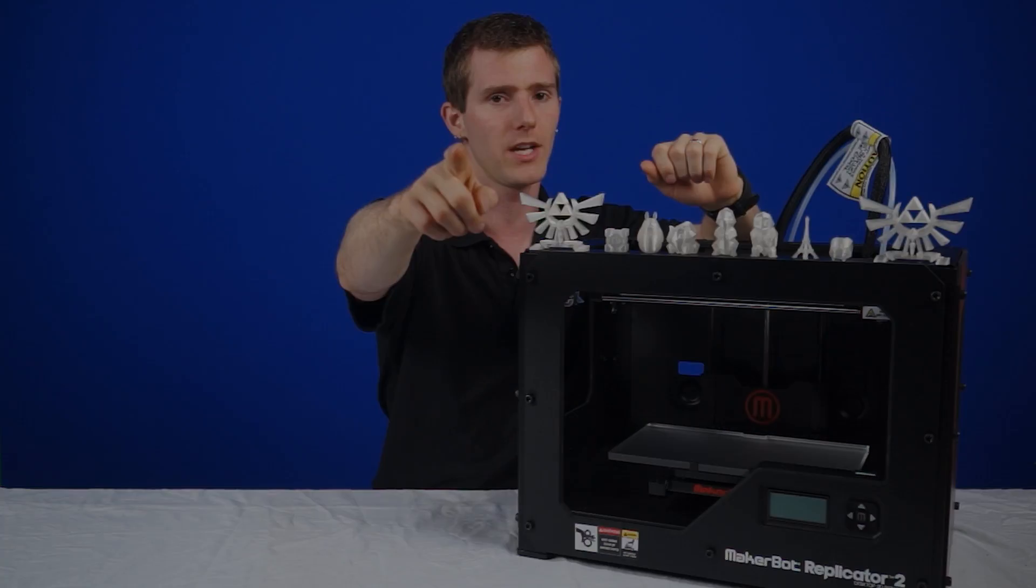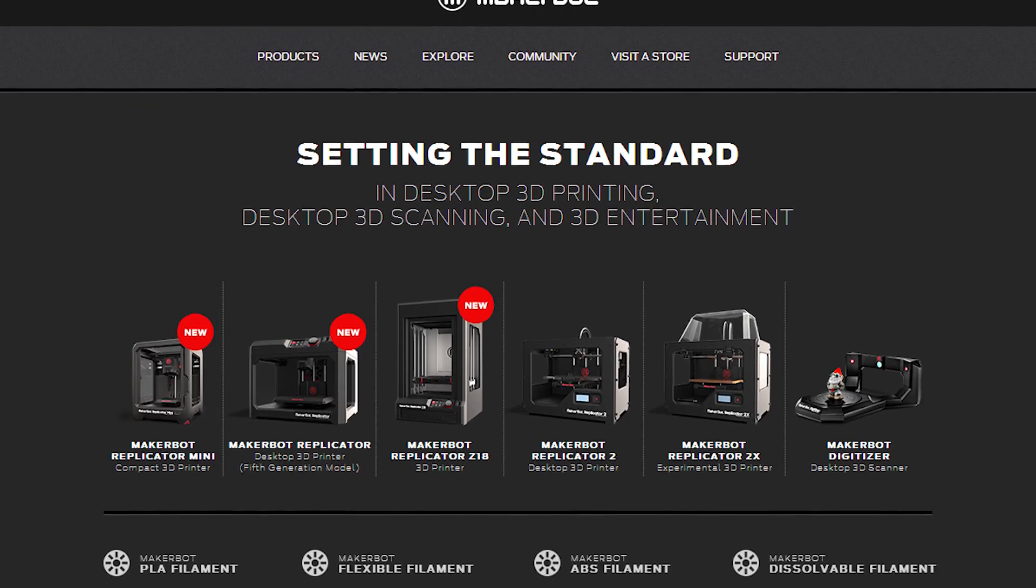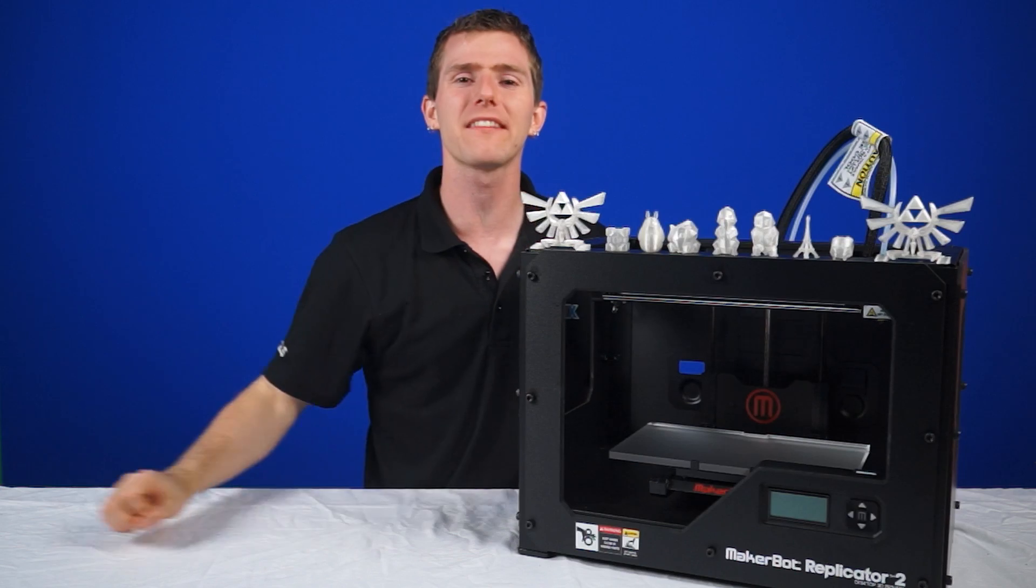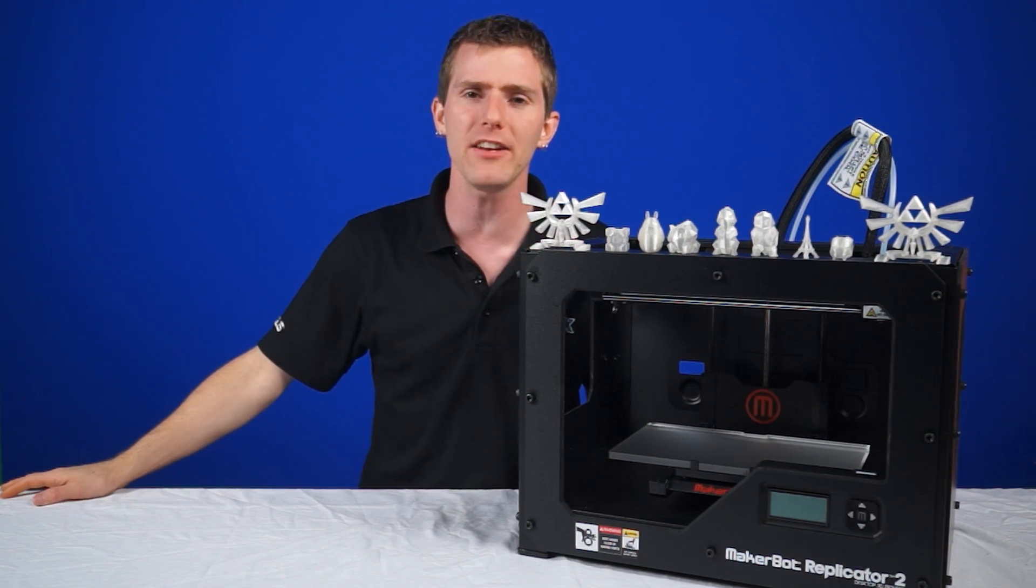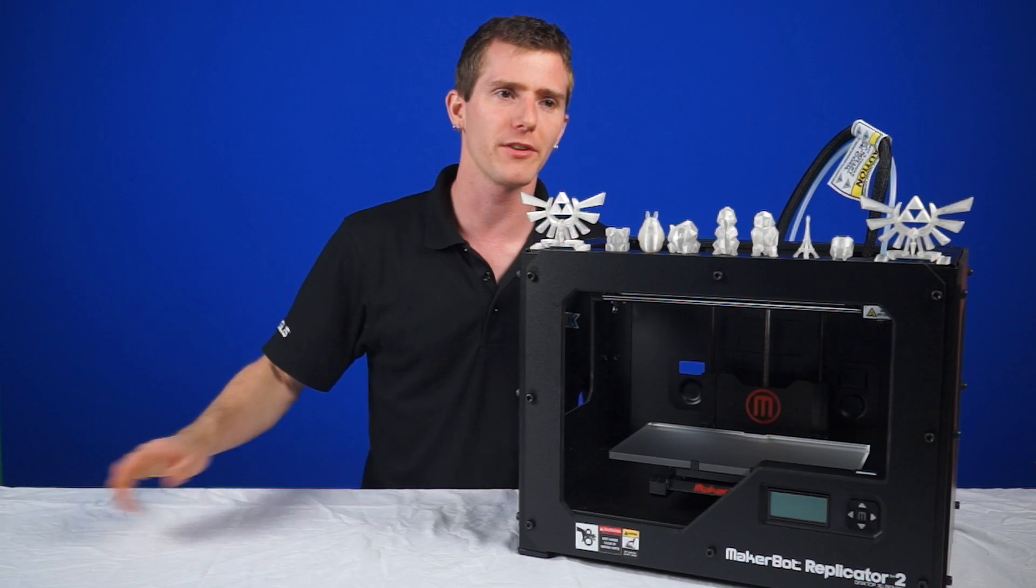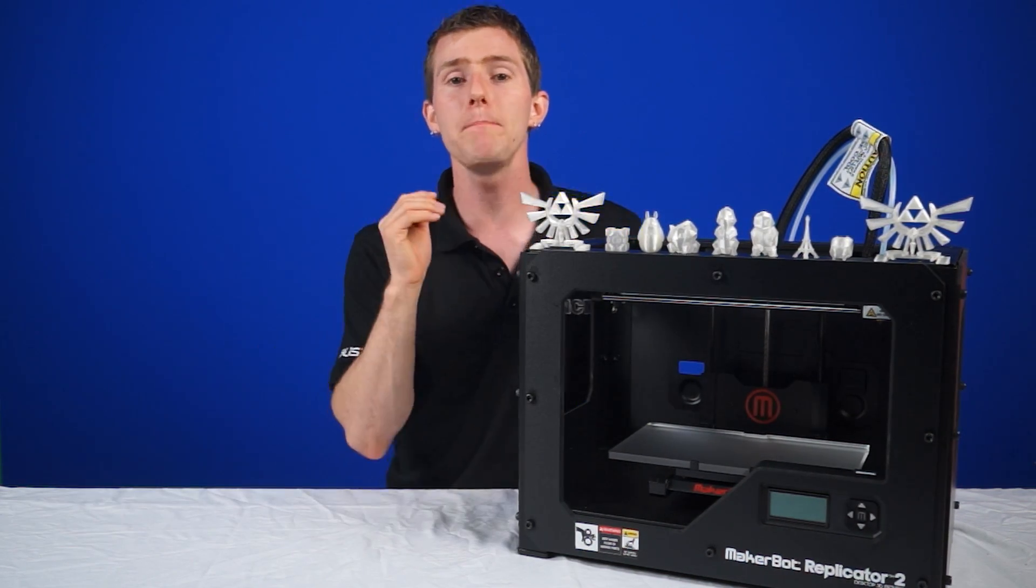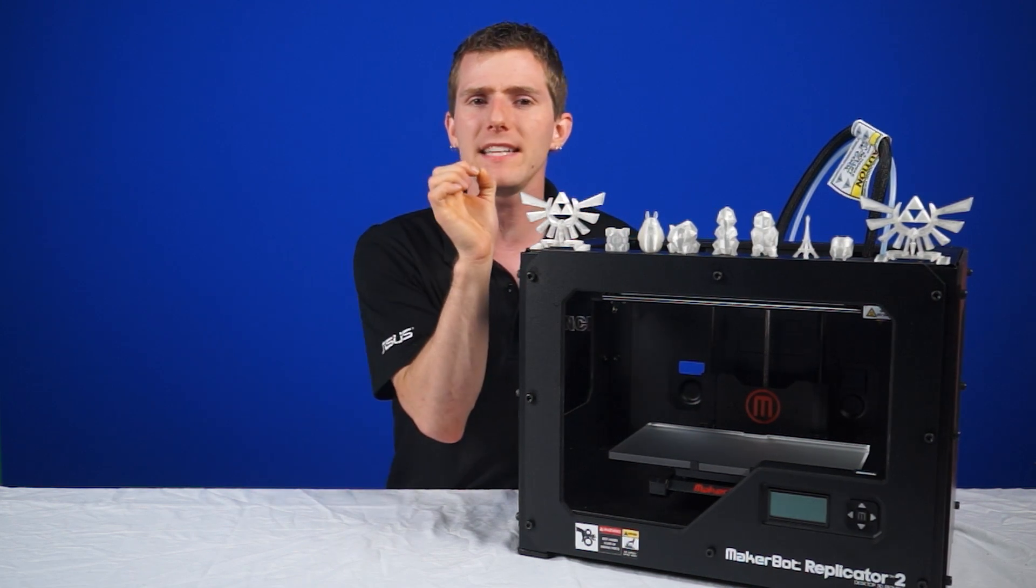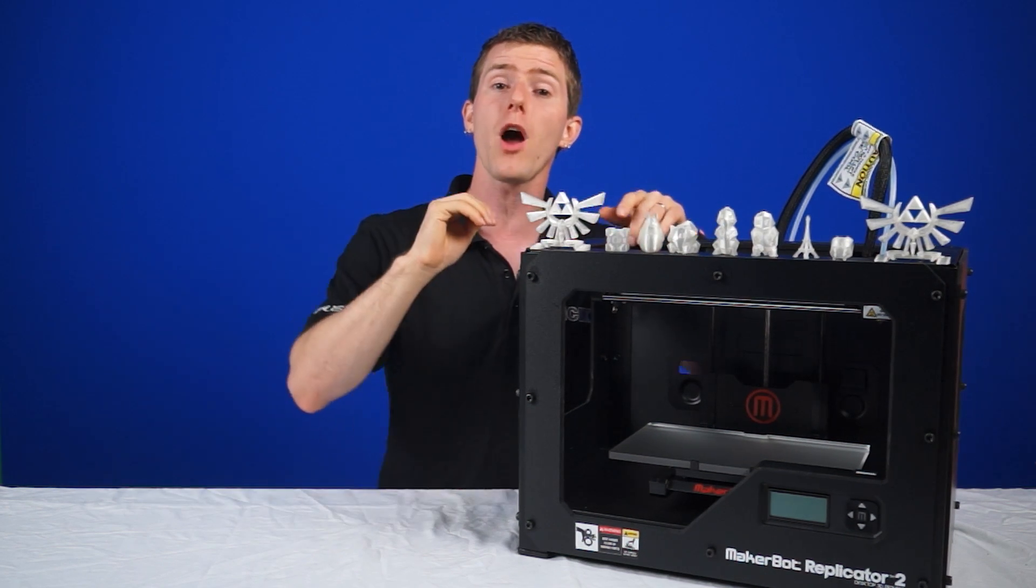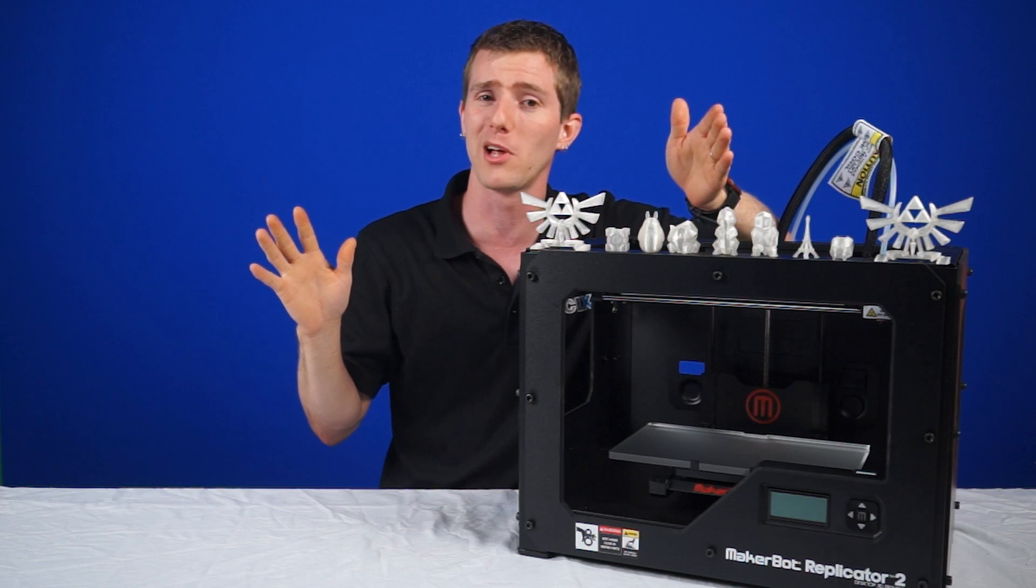Now on to the MakerBot Replicator 2. This is just one of their standard models with a minimum layer height of just 100 microns. That's 0.0039 inches for you Americans out there. Actually, I think microns are used in America too, but good try. It's his first script. That means that you have the ability to print very fine details with very small tolerances, allowing for smooth and precise models.